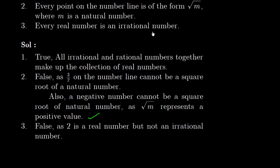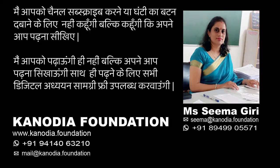Now every real number is an irrational number. False, because two is a real number but not an irrational number.